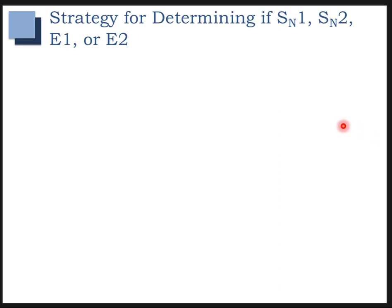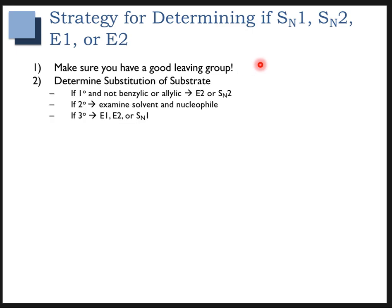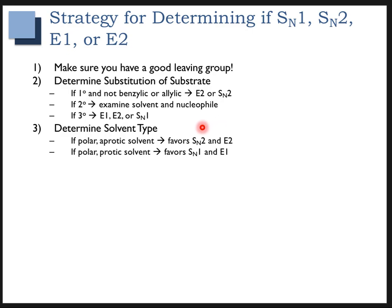So what is our strategy for determining if you have SN1, SN2, E1, or E2? First, you need a good leaving group or none of these reactions will occur. Then look at the substitution: primary substrates that are not benzylic or allylic will be E2 or SN2; tertiary substrates can do either elimination or SN1. For secondary substrates, look at all the other factors. For solvent: polar aprotic solvents favor SN2 and E2; polar protic solvents favor SN1 and E1. Remember, we're checking boxes, so if everything else says SN2 or E2, that's probably what's happening.